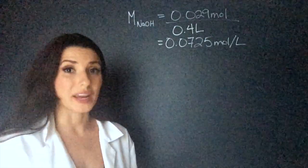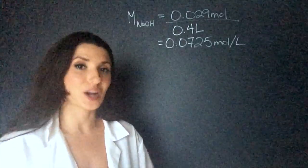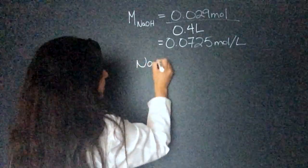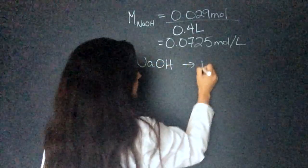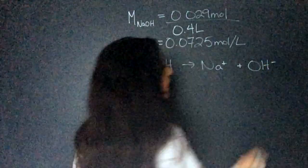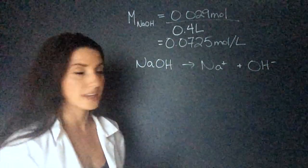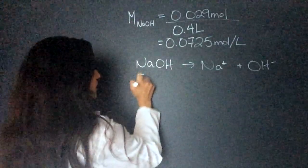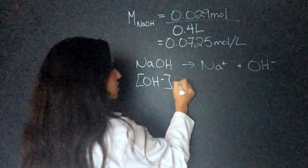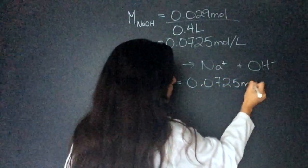Now let's write out the equation for sodium hydroxide and see what the concentration of hydroxide ions will be. So NaOH will give us sodium and hydroxide. And it's a one-to-one ratio. We don't have to balance and it's all set. So we know that the concentration of hydroxide is going to be the same. So that's 0.0725 moles per liter.